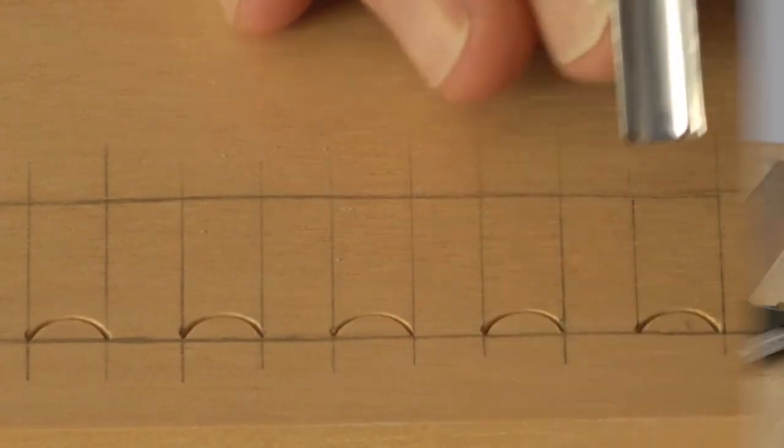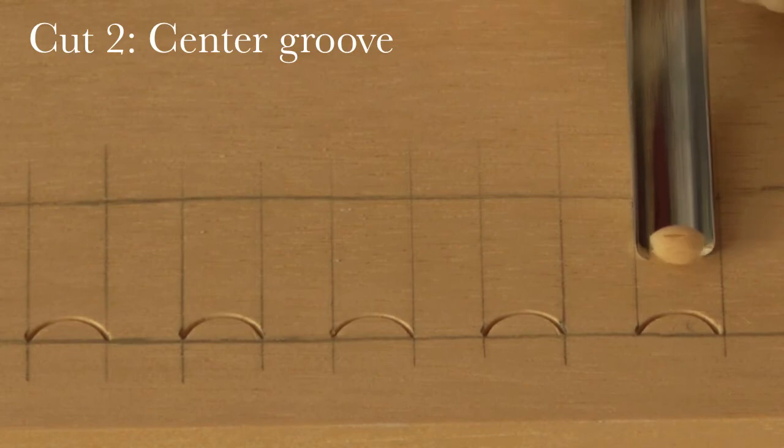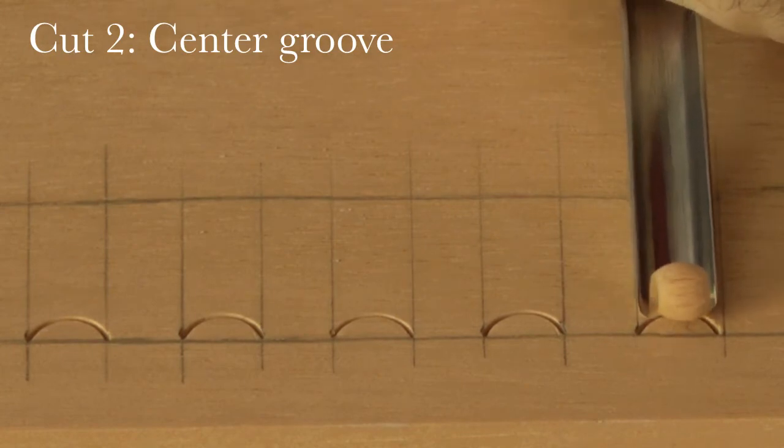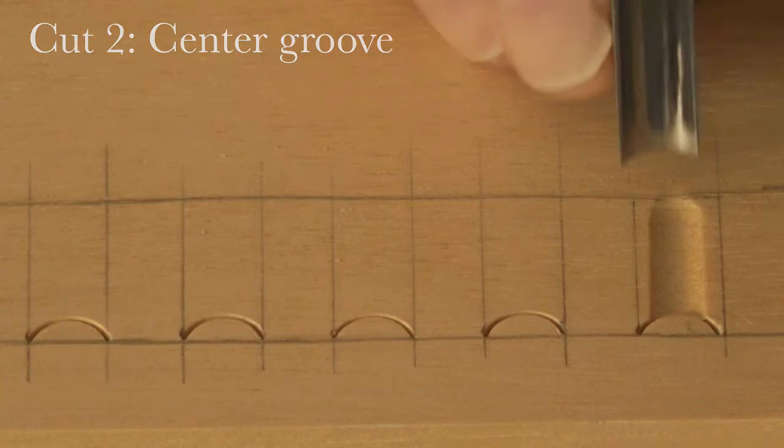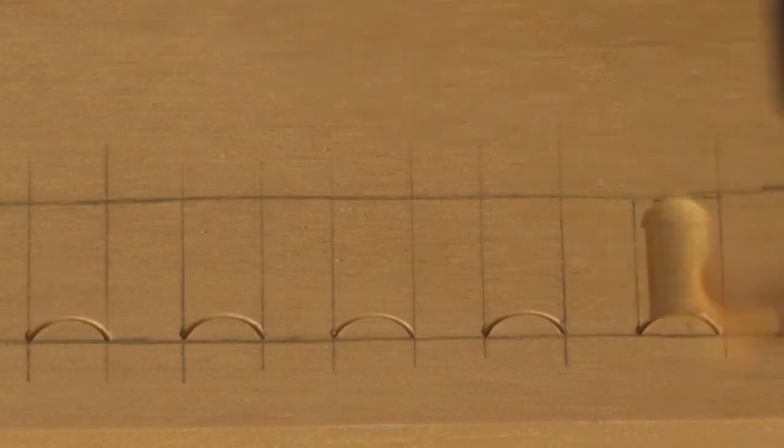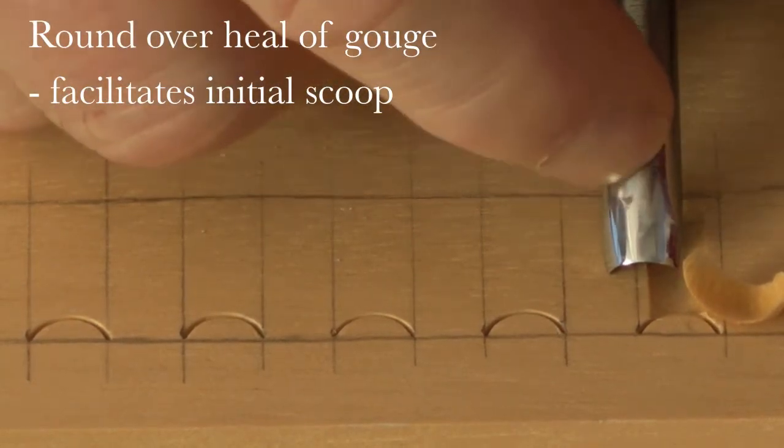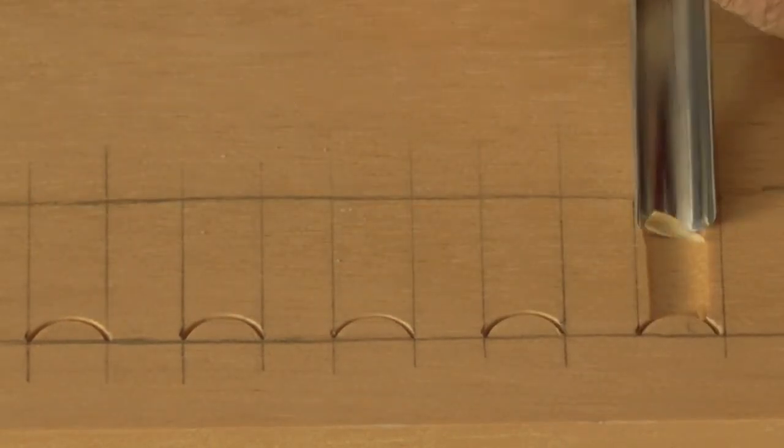The second cut is made in the middle like so. It comes along to the end, so it takes the middle third out. You have a scooping effect here. And in order to facilitate that, you want to take off the heel of the tool so it's much more rounded here, and that way you can scoop in here.